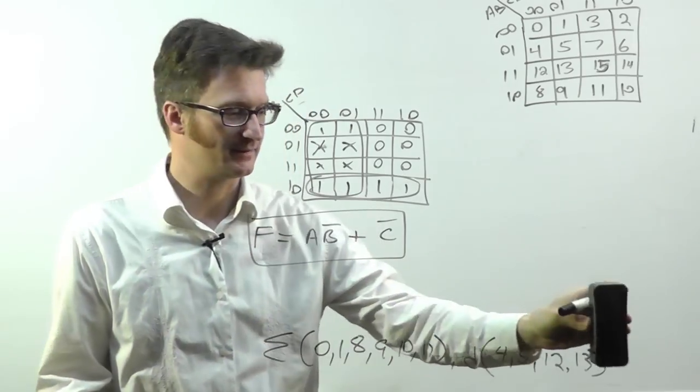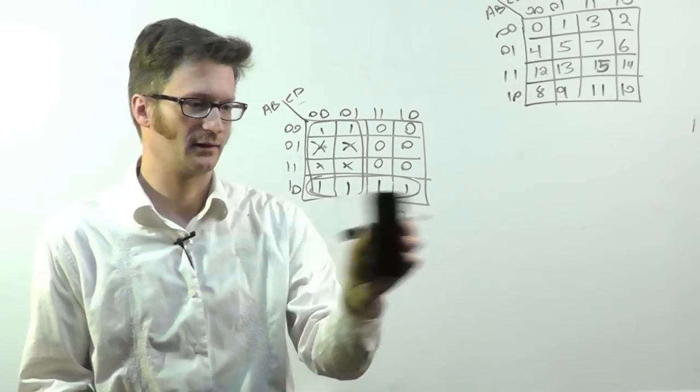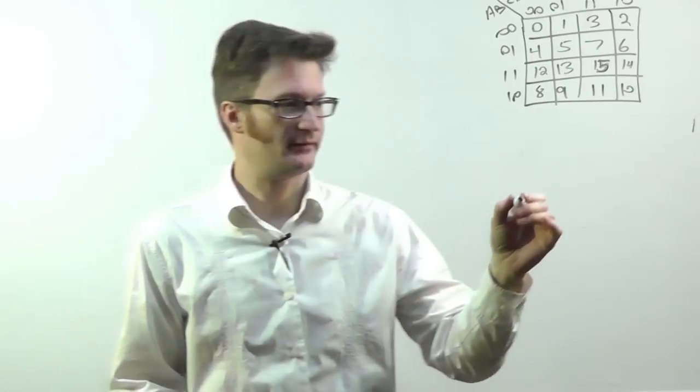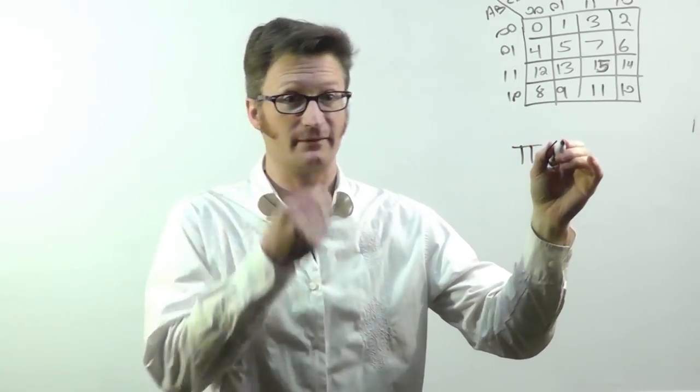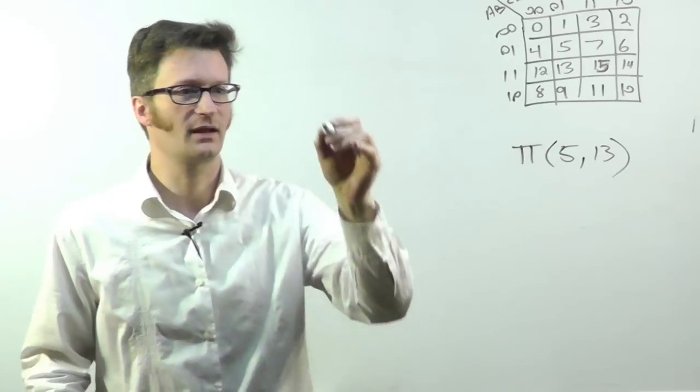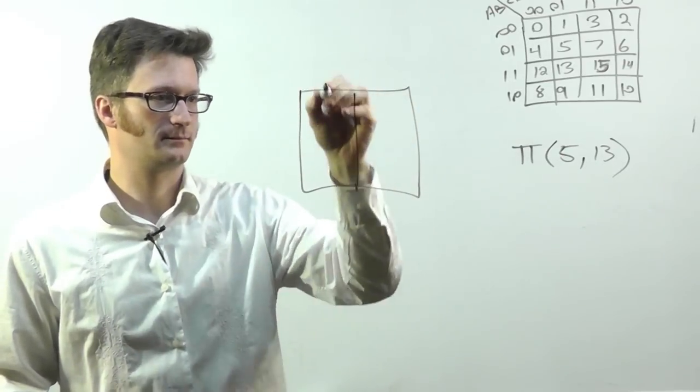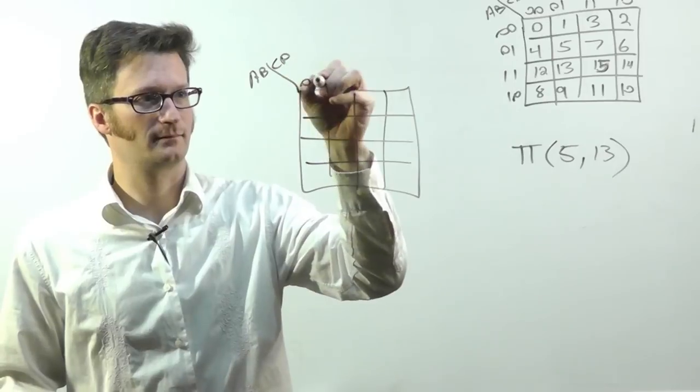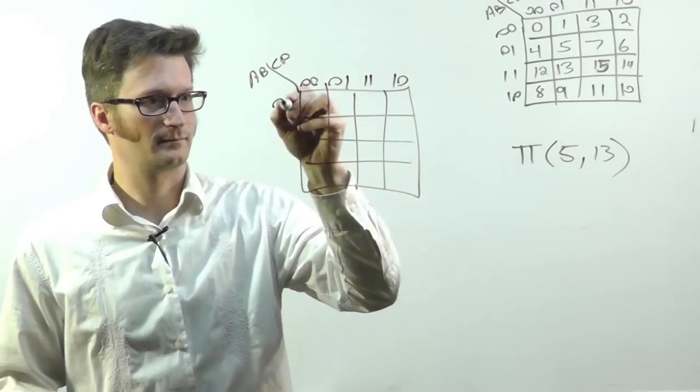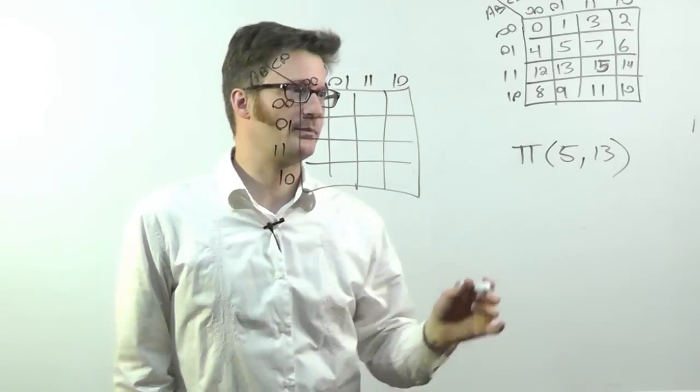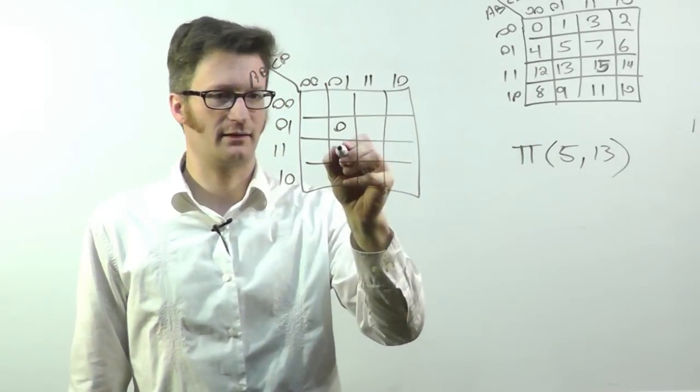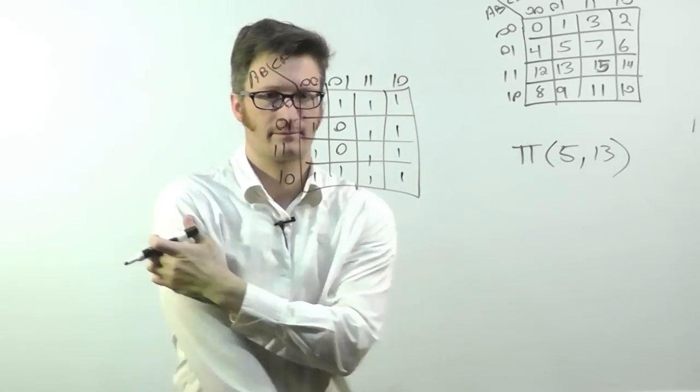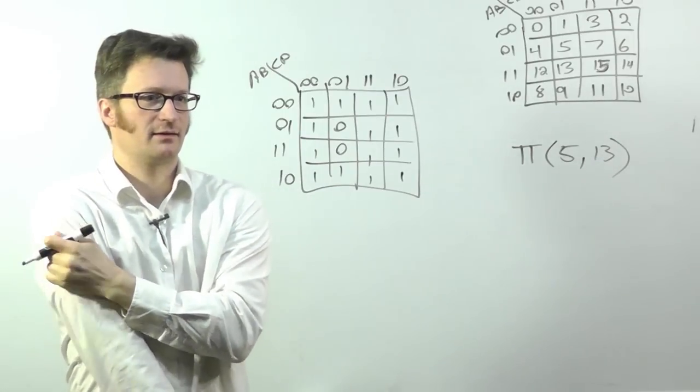We're going to look at one more case, and then we'll be done. What if I have pi of 5 and 13? We draw our map. Pi of 5 and 13 looks like this.